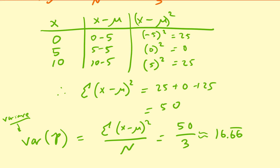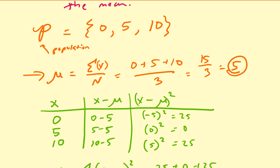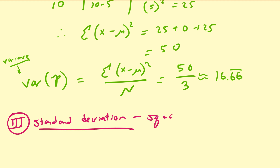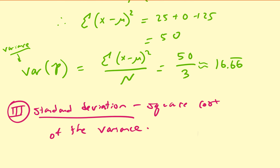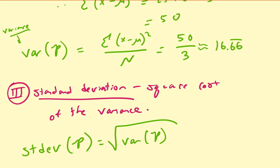Now let's discuss another measure of variation: the standard deviation. The standard deviation is the square root of the variance. So the standard deviation of the population, sometimes abbreviated STDEV, is the square root of 16.67 (repeated), which comes out to approximately 4.08.